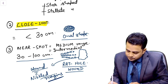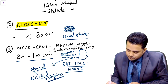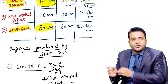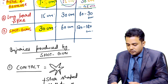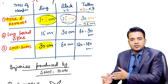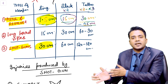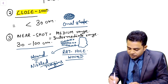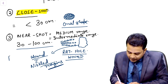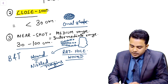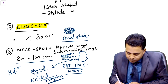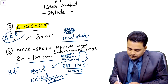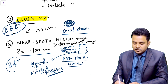At a distance of 30 to 100 cm in case of shotgun — the intermediate range — you can get blackening and tattooing, but not singeing. In the near shot, blackening and tattooing are present. In close shot, all three effects — singeing, blackening, and tattooing — are present. This is how you tell the range of a weapon.